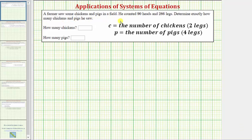A farmer saw some chickens and pigs in a field. He counted 90 heads and 286 legs. Determine exactly how many chickens and pigs he saw.